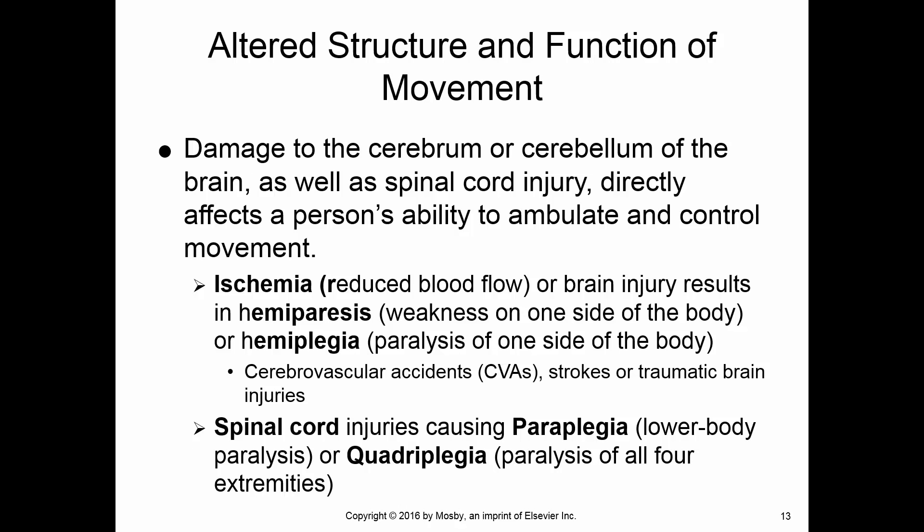As far as neurological alterations, the brain and spinal cord can affect a person's mobility. Ischemia — reduced blood flow to the brain — can cause hemiparesis, which is weakness on one side, or hemiplegia, which is paralysis on one side. These come in the form of cerebrovascular accidents, strokes, or even traumatic brain injuries.